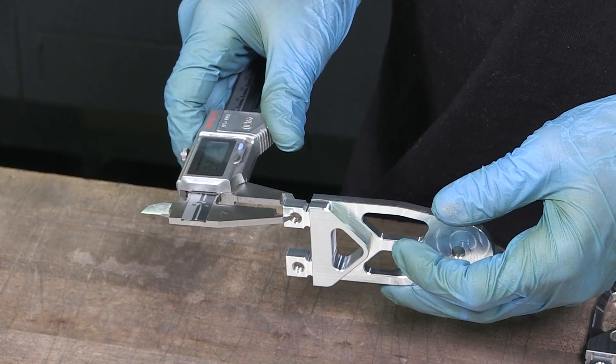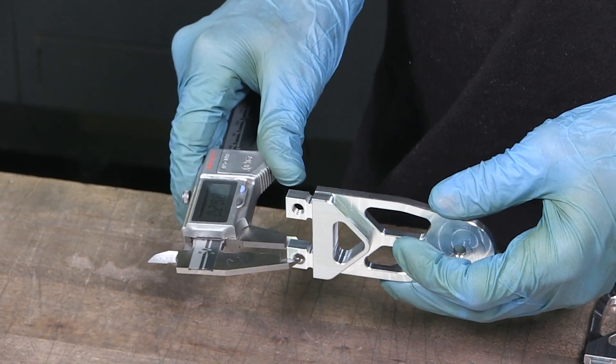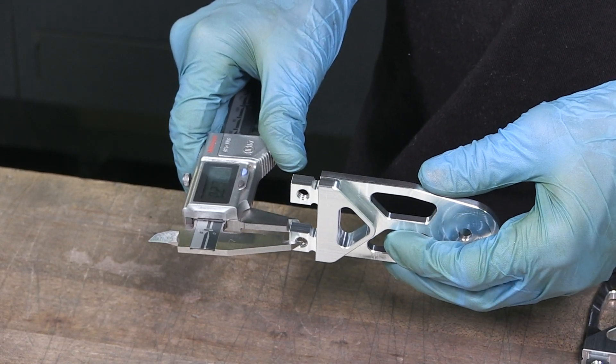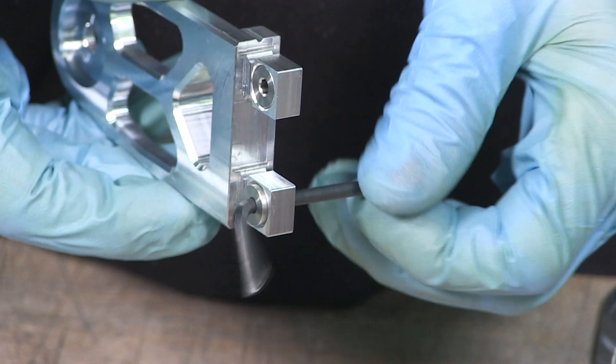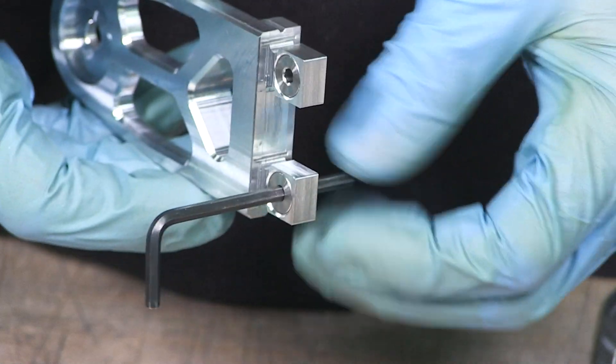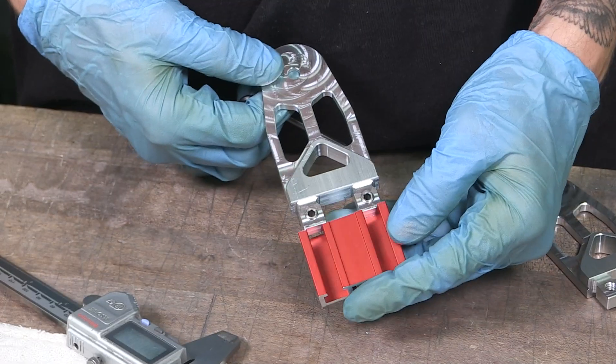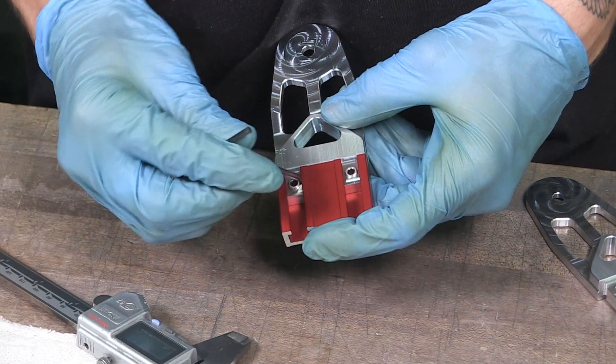Those parts are also hand inspected by the machinist and made sure that they fit on the dual-purpose T-track.